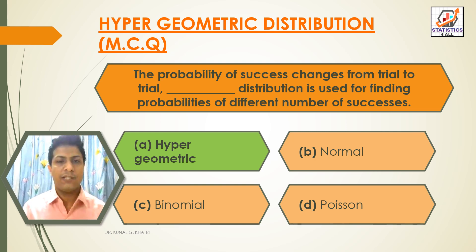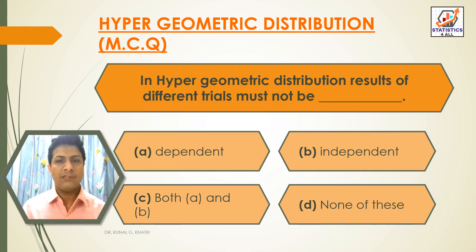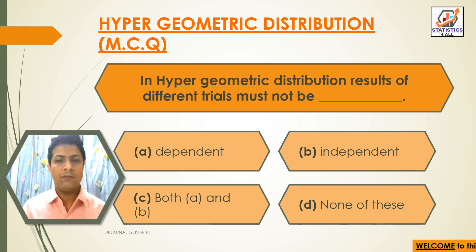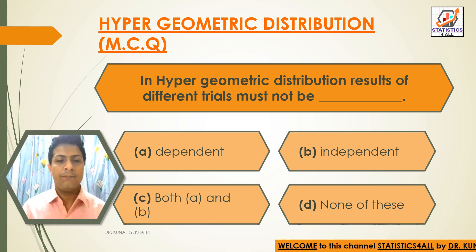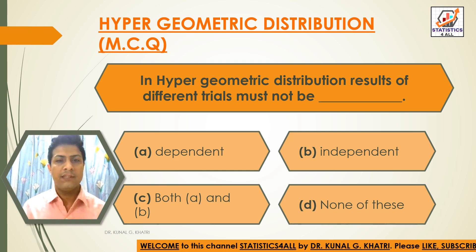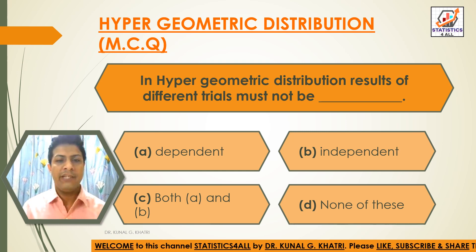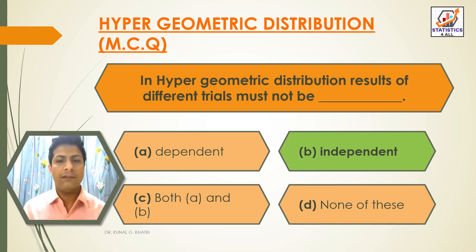Next question: In Hypergeometric distribution, results of different trials must not be — Option A: Dependent, Option B: Independent, Option C: Both A and B, Option D: None of these. The answer is Option B — Independent. In Hypergeometric distribution, results of different trials must not be independent.